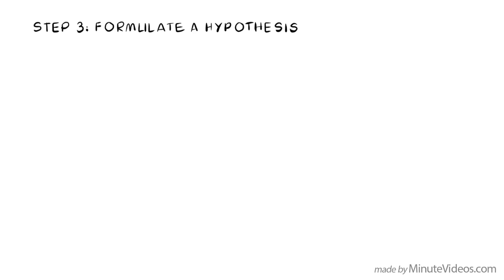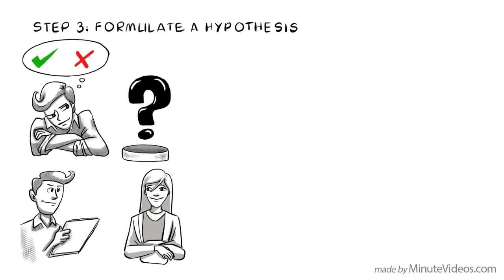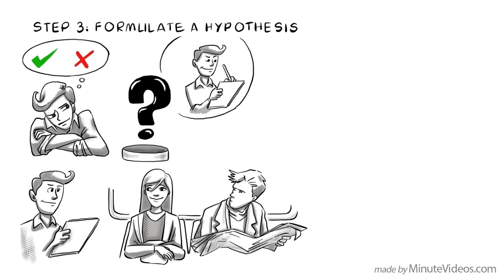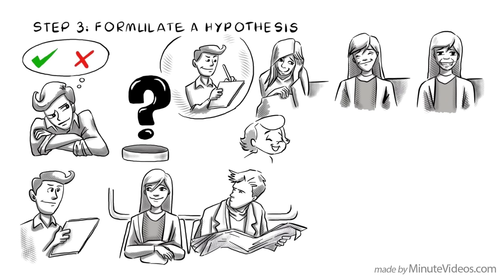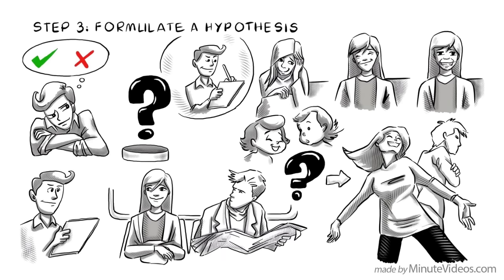Step 3. Formulate a hypothesis. A hypothesis is a theory that you can test to see if your prediction is right or wrong. From your observation, you have noticed that women smile more often and that people who are smiling seem to be happy. From your research, you know that there are different types of smiles: shy, genuine and false. In one paper, you read that baby girls smile more often than baby boys. Here is a hypothesis: Women smile more than men because they are happier than men.